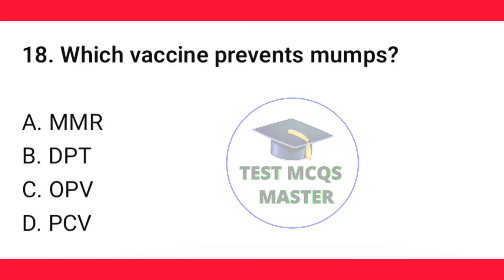Question number 18. Which vaccine prevents mumps? The correct option is A — MMR.